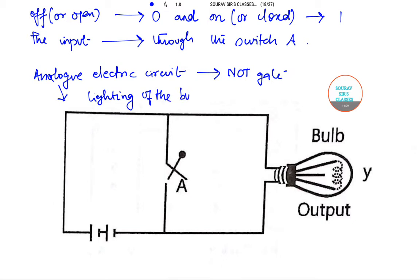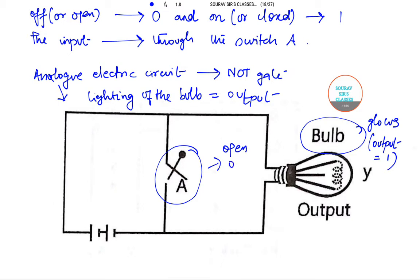The input is introduced through the switch A, and the lighting of the bulb is nothing but our output. Here we find that the bulb will actually glow, or we can say that the output equals 1, only when switch A is open, that means the value of A itself is equal to 0.